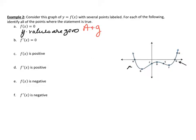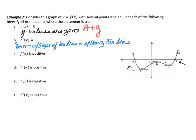f'(x) equals zero means the slope of the tangent line is zero — a horizontal tangent. Where do horizontal tangent lines occur? At b, d, and f. Next: f(x) is positive means the y-values are greater than zero, so we're looking for points above the x-axis. The only point above the x-axis is h, so the answer is just h.